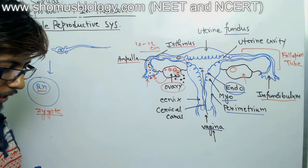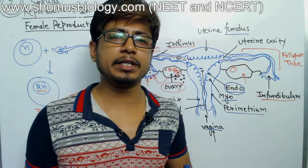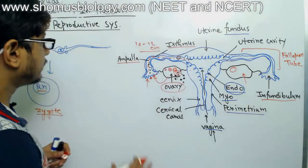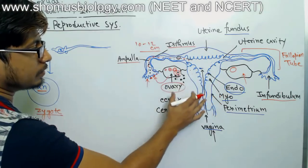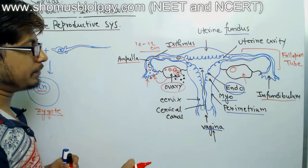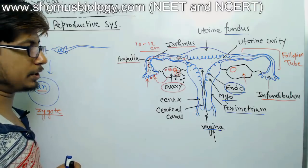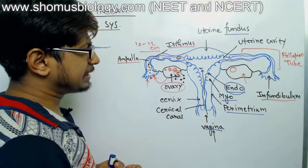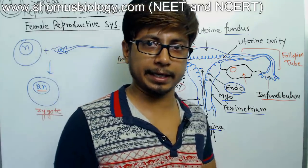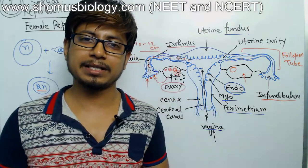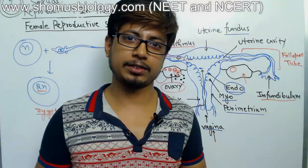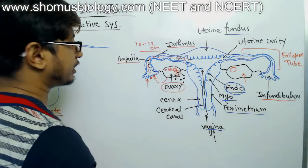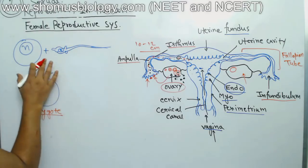Once the sperm delivers the pronucleus inside the egg, the egg now has a 2n diploid nucleus. This large cell is known as the zygote, and that ends the process of fertilization. The fertilization in humans is known as internal fertilization, meaning the event takes place inside the female body. In fish, it is external fertilization, where fertilization occurs outside the body.